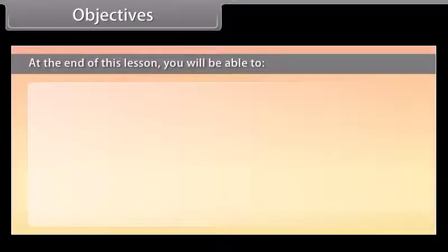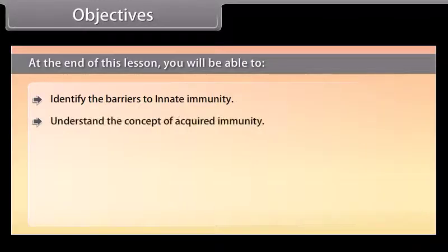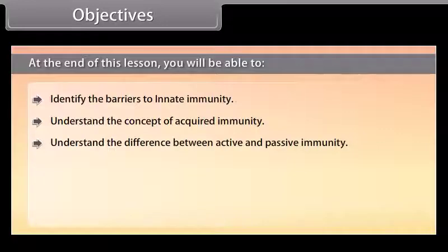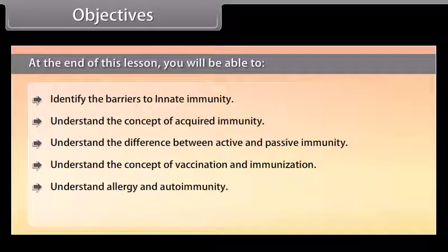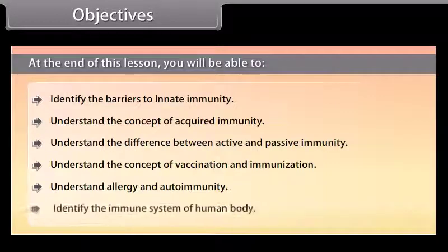At the end of this lesson, you'll be able to: identify the barriers to innate immunity; understand the concept of acquired immunity; understand the difference between active and passive immunity; understand the concept of vaccination and immunization; understand allergy and autoimmunity; and identify the immune system of the human body.